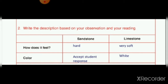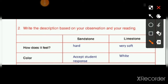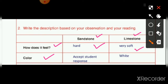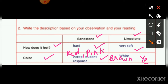Let's discuss the answer of question 2 of worksheet 6. Write the description based on your observation and reading. Sandstone and limestone में main difference बताना है — how does it feel and what is the color? Sandstone is hard and limestone is very soft and can easily break. Sandstone can be red, pink, brown, or yellow in color, but limestone is only white in color.